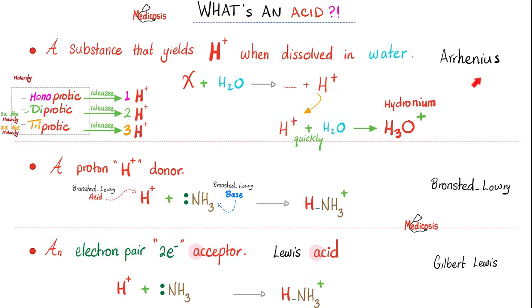The first definition is called Arrhenius definition, which means an acid is a substance that yields protons or hydroniums when dissolved in water. And if I give you just one proton, I'm called monoprotic acid. How about two protons? Diprotic. How about three? Triprotic. If I am a donor, if I donate protons, that's a Bronsted-Lowry acid. If I am an electron pair acceptor, remember, acceptor is Lewis acid.